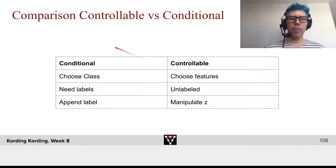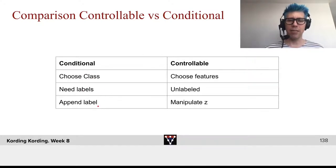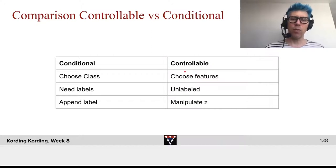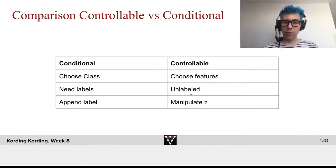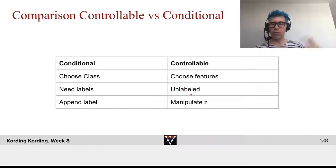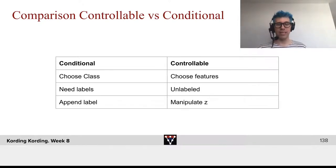What's the comparison with conditional? In conditional, you choose the class — you need labels, you append the labels. The idea with controllable is we want a large database where we can instead choose features like age, and we have a large unlabeled dataset. Of course, if we want to control age, we need training data that tells us about age. But that's it.